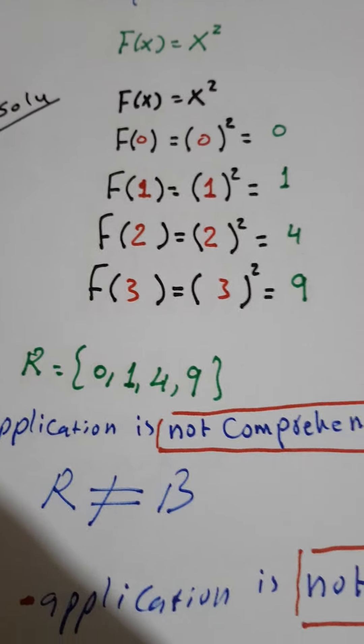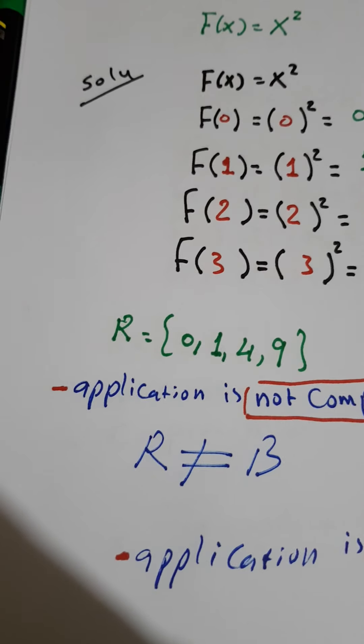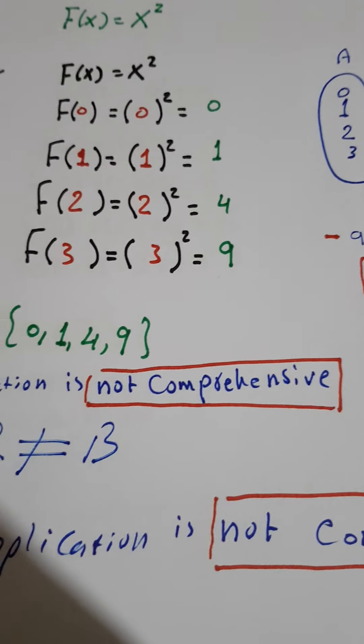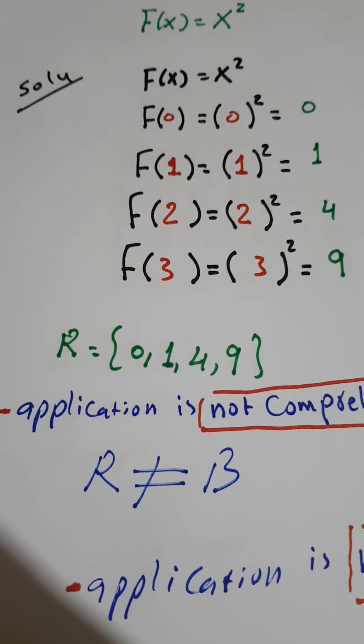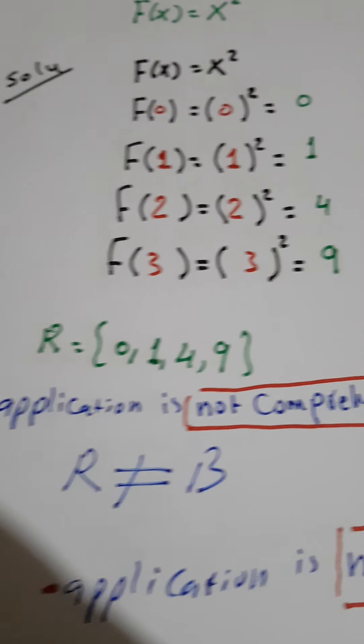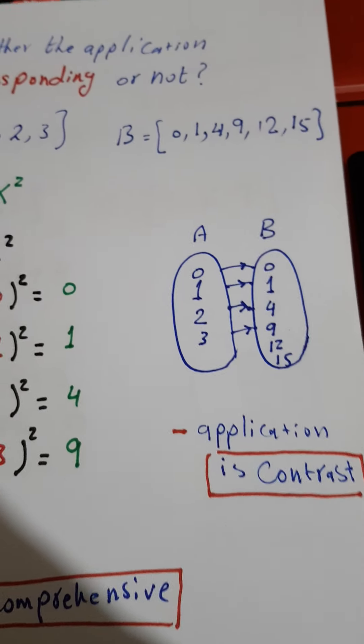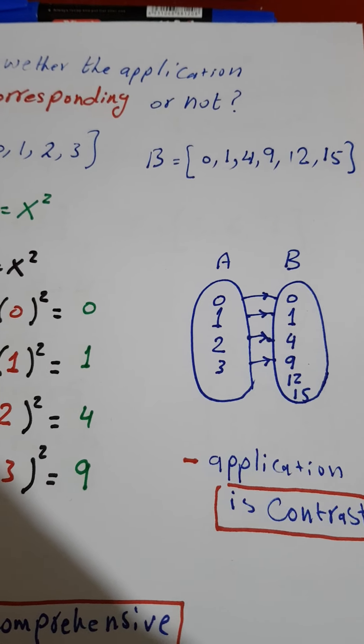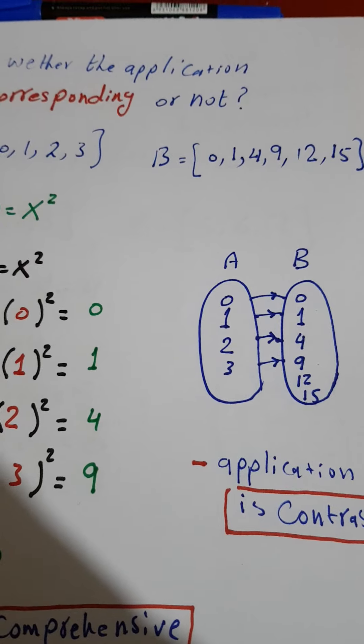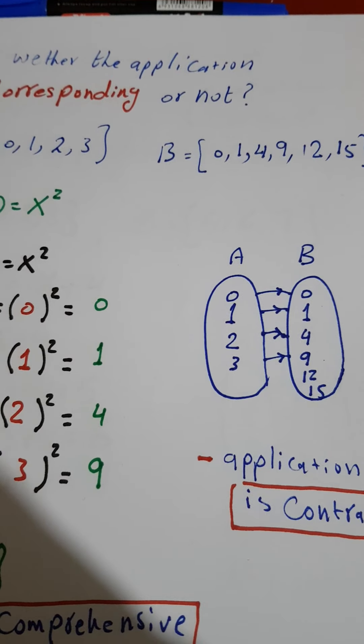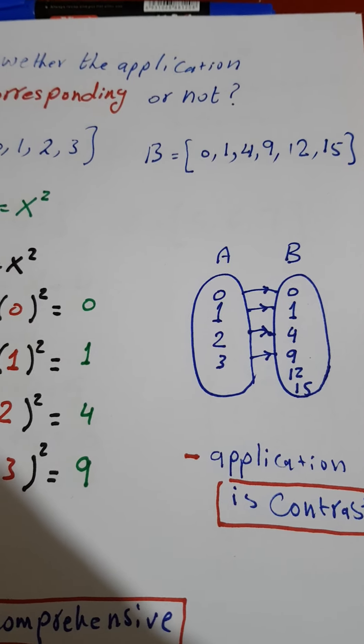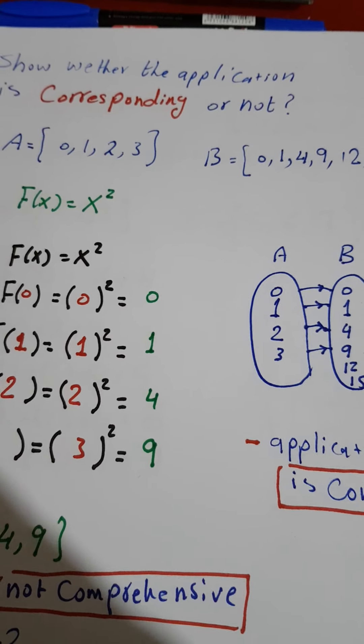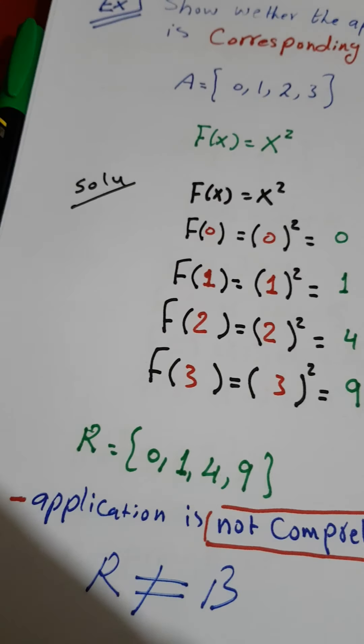...and B is {0, 1, 4, 9, 12, 15}. There are two extra elements here. For the range is 4 elements and B is 6 elements.